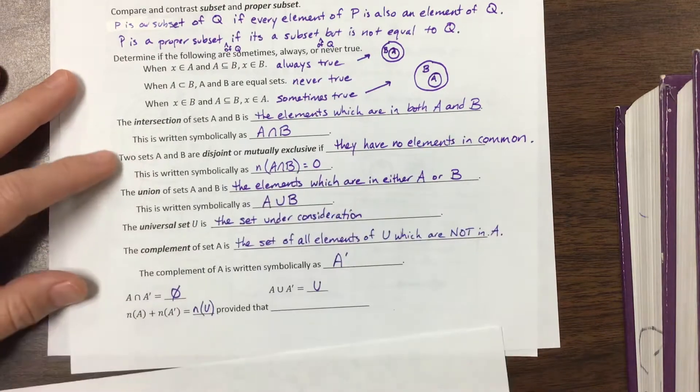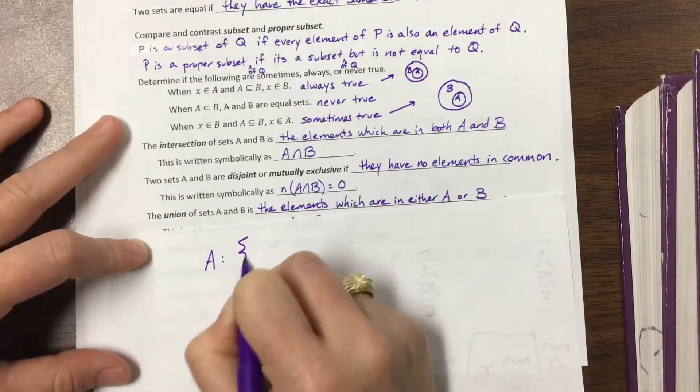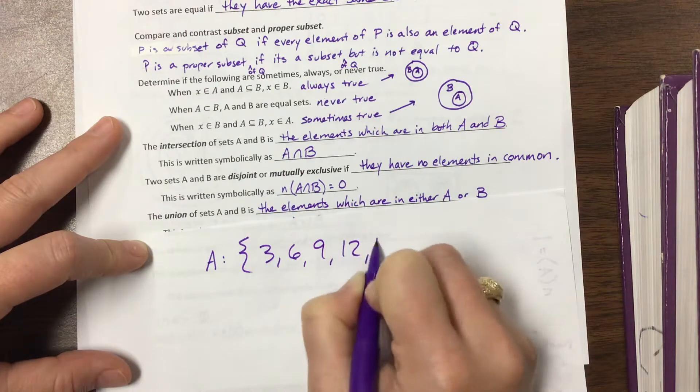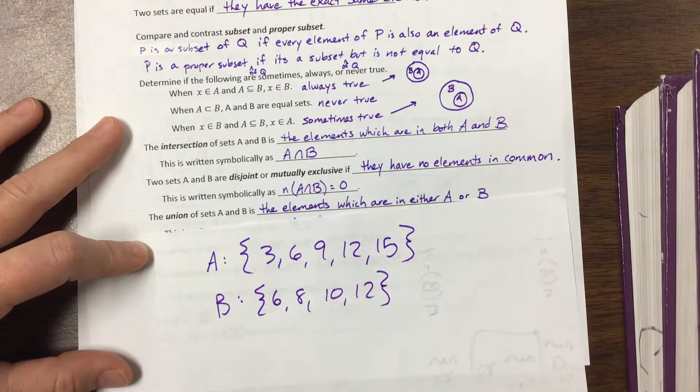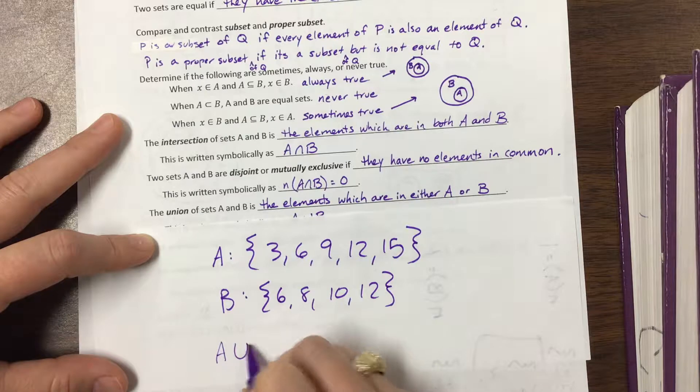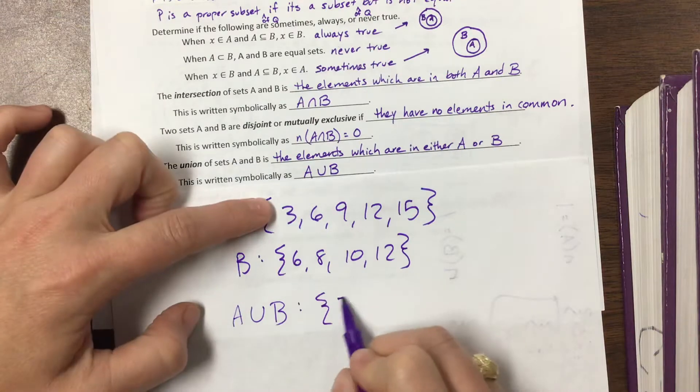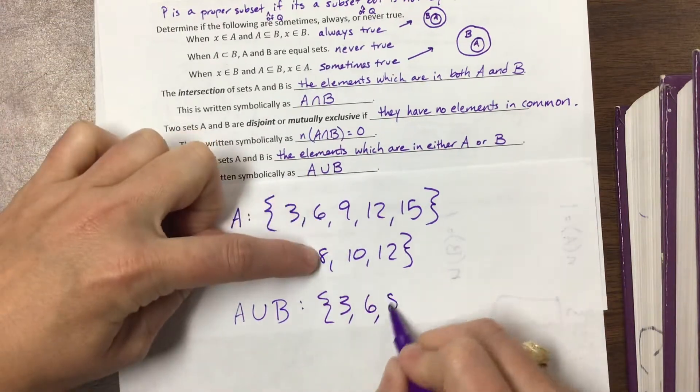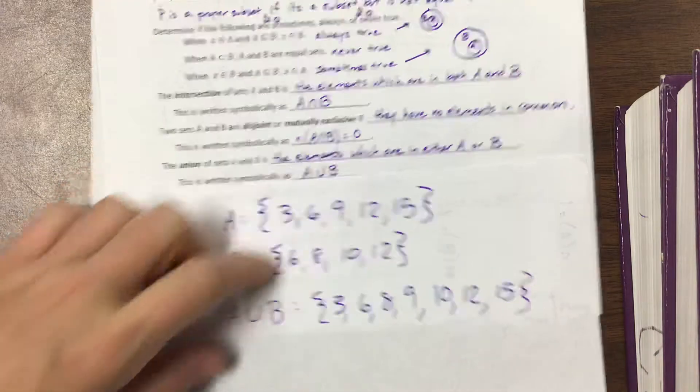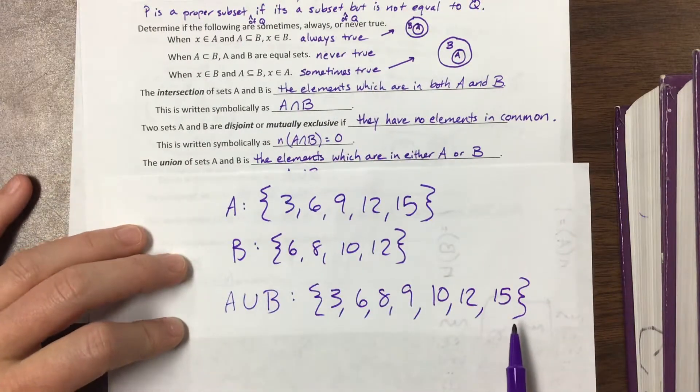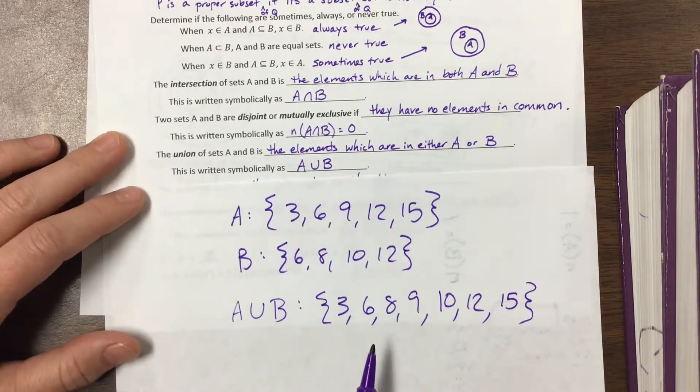The union are the elements which are in either A or B. So if A was that set {3, 6, 9, 12, 15}, and B was the set {6, 8, 10, 12}. The union, A union B, would be the set, well, we need everything. So we have 3, 6 shows up in both but we need it, we have 8 and 9 and 10, and 12 shows up in both, and then we have 15. So if I were to write them, it helps to put them in numeric order if there's something that you can order. But if you don't, you're not wrong, it's just a little harder to work with. And that's written A union B.